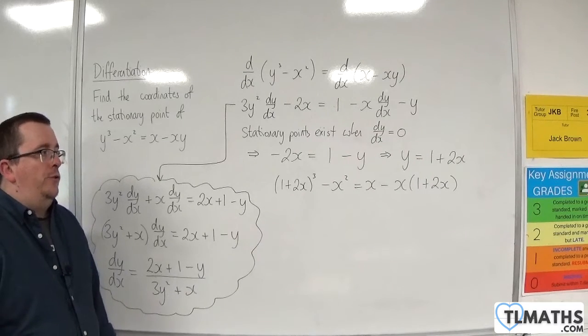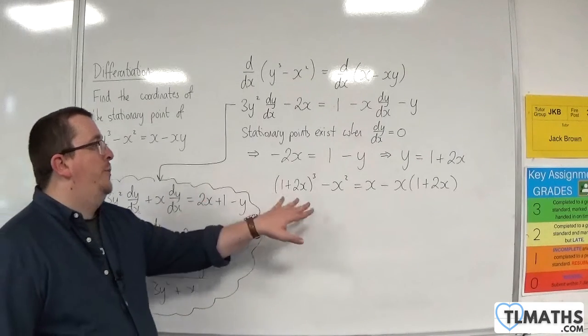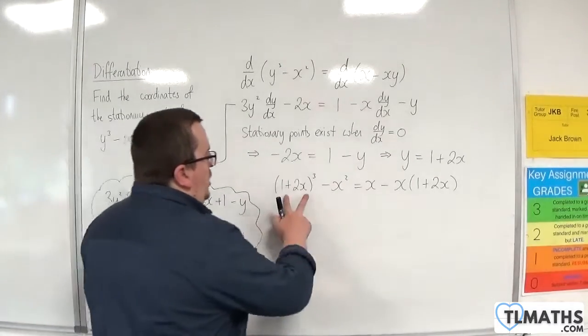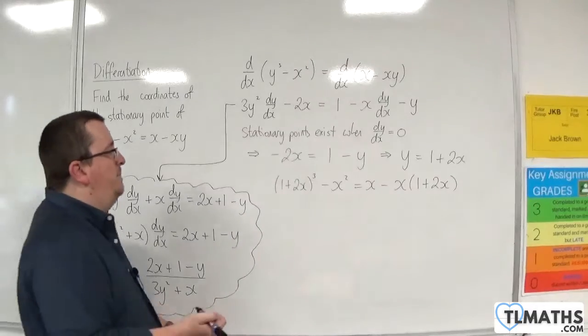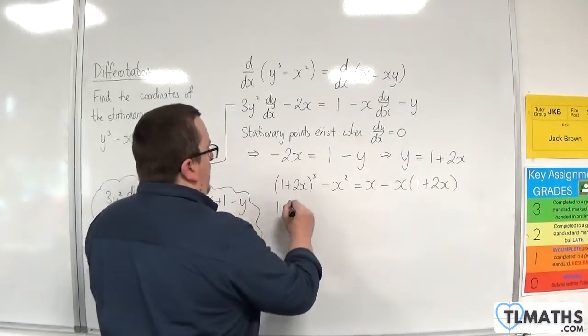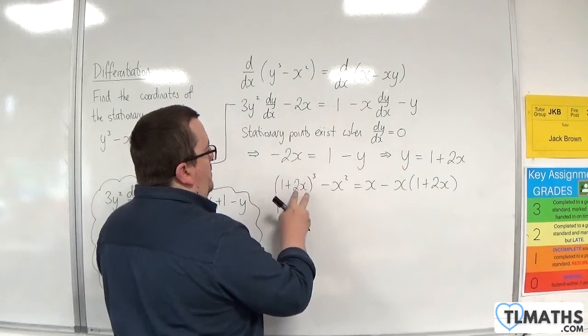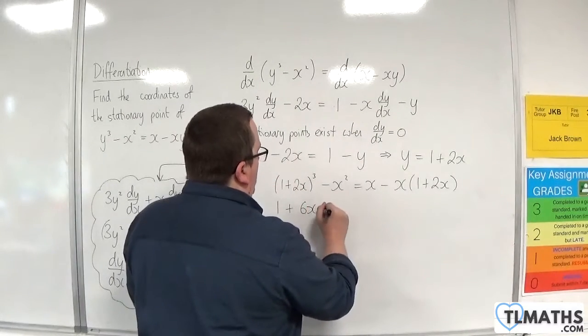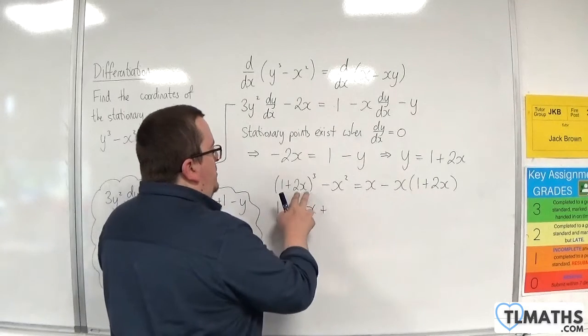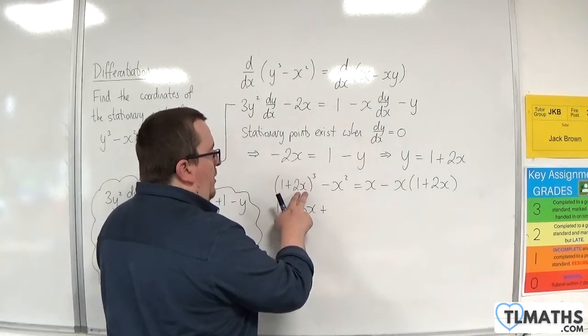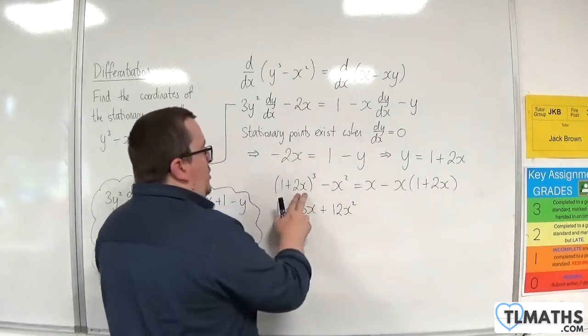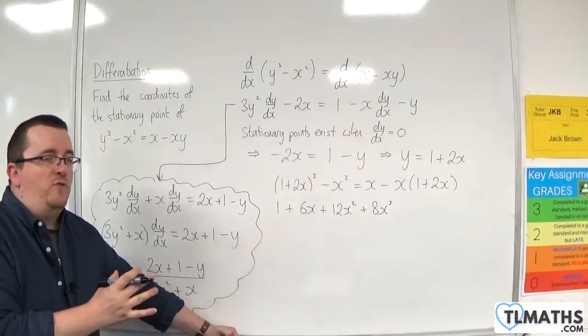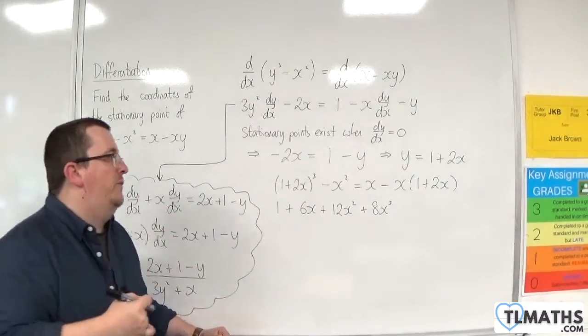So, we now have to solve this equation. And in order to do that, I've got to expand these brackets out and collect like terms. So, the (1 + 2x)³, you could use binomial expansion to do that. So, that would be 1³ + 3 × 1² × 2x, which would be 6x, plus 3 × 1 × (2x)², which would be 4x² × 3, which is 12x², and then (2x)³ is 8x³. So, I'm using binomial expansion to expand that bracket out. If you want to do it in more stages, then feel free to.